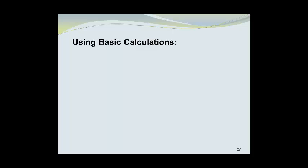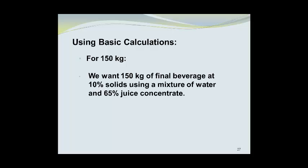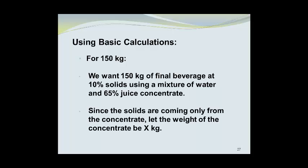Now we're going to use the basic calculation method, which you may choose to ignore, or you may want to fast forward and go to example number 2 at this time. However, for 150 kilograms, we want 150 kilograms of final beverage at 10% solids using a mixture of water and 65% juice concentrate.